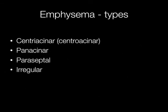There are four types of emphysema. Centriasinar and panacinar emphysema are the important ones that are clinically significant. Paraseptal and irregular emphysema generally don't cause significant clinical problems.